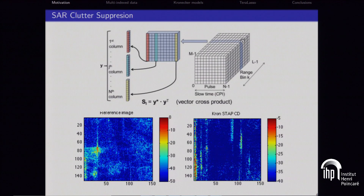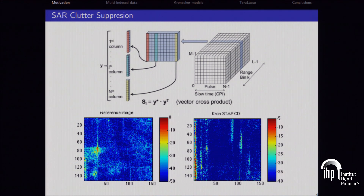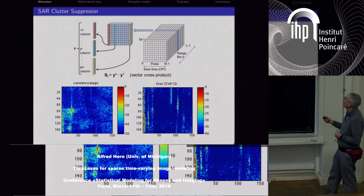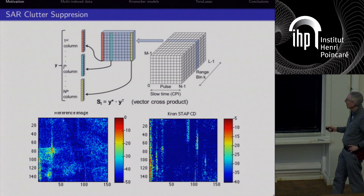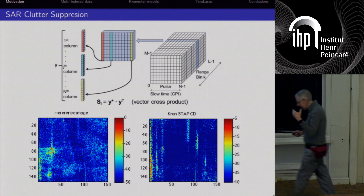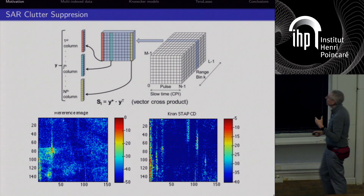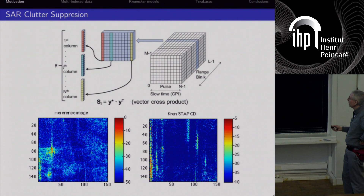Another motivating application is synthetic aperture radar imaging, where one forms a reference image from a space-time adaptive processing over both range and pulse. Pulses give you replicates of a range bin at some range from the radar, and you can form images by looking at the returns at various time-gated pulse-return selected range bins.